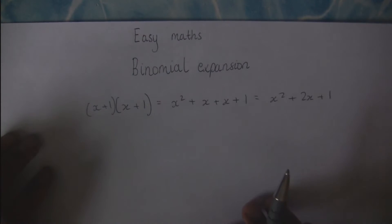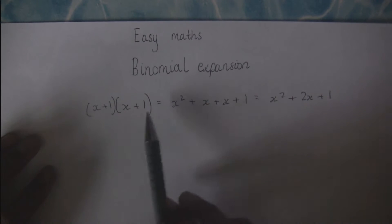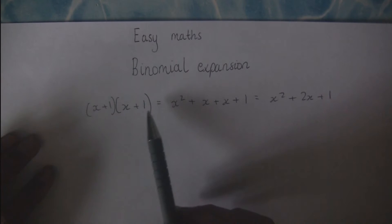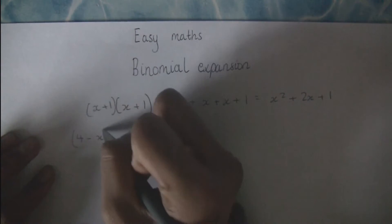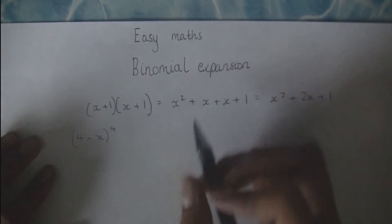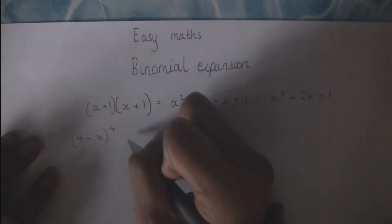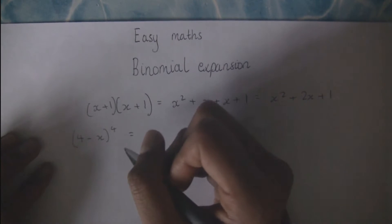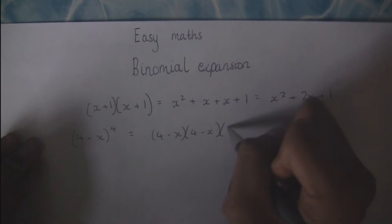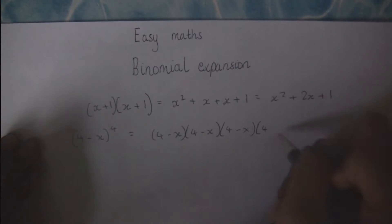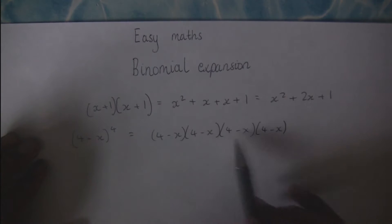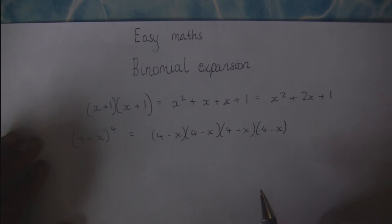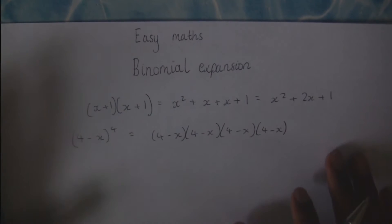Binomial Expansion works on the fact that you're not going to have just two brackets. That expression is the same as (x+1) squared. But you're not going to have two brackets — you're going to have five or six. So you could get something like (4 minus x) to the power of 4. Writing out 4 minus x four times and expanding manually will take a very long time. You don't have that much time in the exam, so you need a quick way of doing it — and that's where Binomial Expansion comes in.